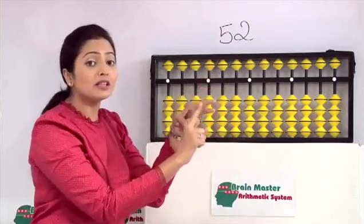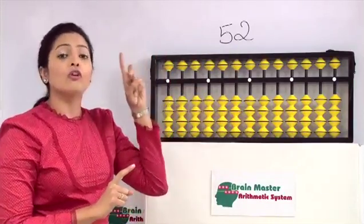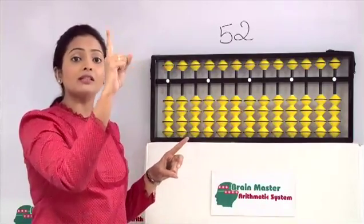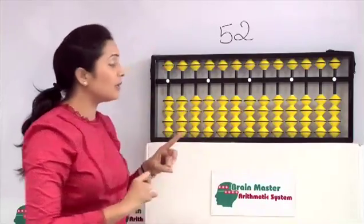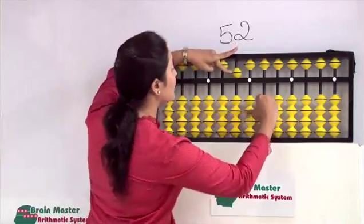Above the bar is always middle finger for tens rod. For the unit rod it is always forefinger. Now I will explain how you have to do it. If you want 52: 5 and 2.